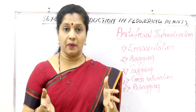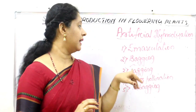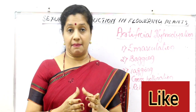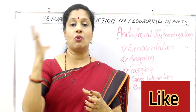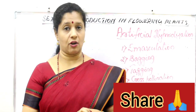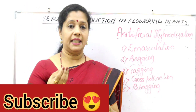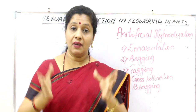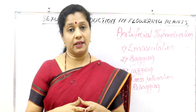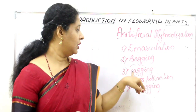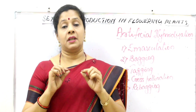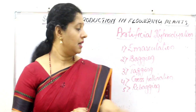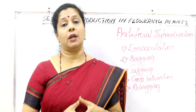After emasculation, if you leave the flower open, any unwanted pollen can fall on it. To avoid this, we bag it — using a polythene cover, paper bag, or butter paper cover — so that while the stigma becomes receptive, no undesirable pollen falls on it. Then we slowly remove the cover, take the pollen from the desired variety, and dust it on the stigma once it is receptive. After dusting, we cover it again to prevent unwanted pollen from falling. During this time we also do tagging — writing the name of the breeder, the varieties used, and the date on a tag attached to the bag. Then we re-bag it so no unwanted pollen will fall on it.